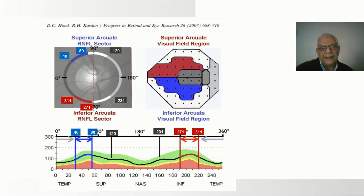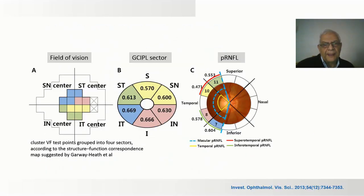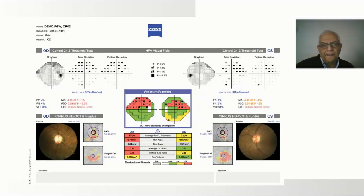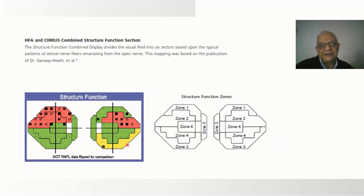This relationship can be shown graphically. Another study showed the relation between changes in the central area defined by Garway-Heath's map, changes in the ganglion cell inner plexiform layer, and changes in the peripapillary retinal fiber layer. Such changes are now grouped in the Zeiss printout showing the same regions suggested by Garway-Heath.